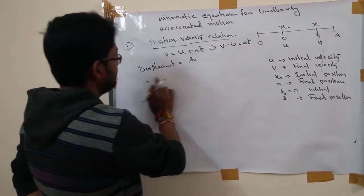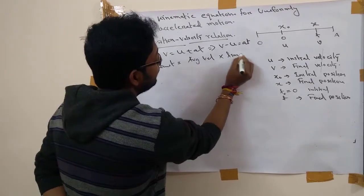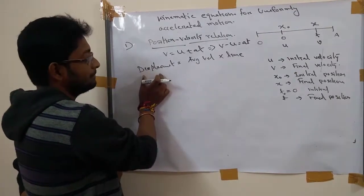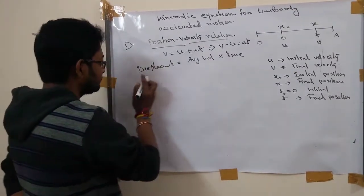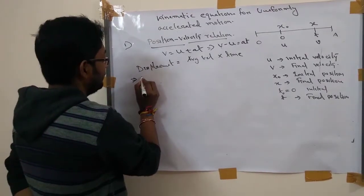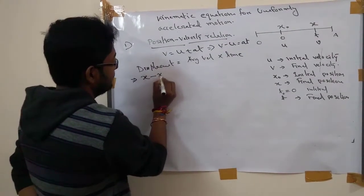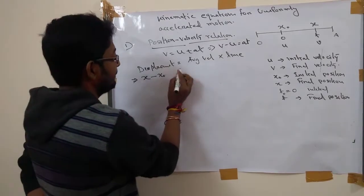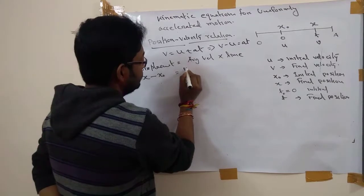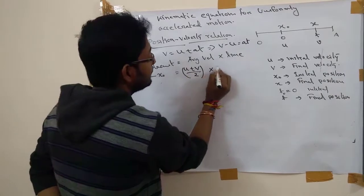Why am I necessary? Because we know that average velocity equals displacement per time. So what is displacement? Displacement is final position minus initial position. What is average velocity? u initial plus final by 2. This is my average velocity and this is the time.